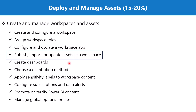In the previous two videos we had a look at the workspace and the workspace roles, and we have seen that there are different kinds of assets that you can create in a workspace. These include datasets, dataflows, data marts, streaming datasets, paginated reports, and a lot of other entities. So these are all called assets in a workspace, and now we are going to look at how we can publish, import, and update these assets in a workspace.